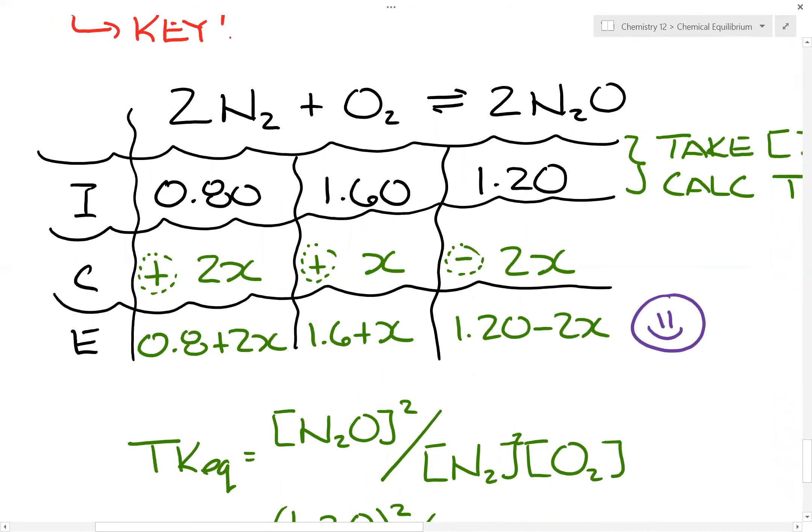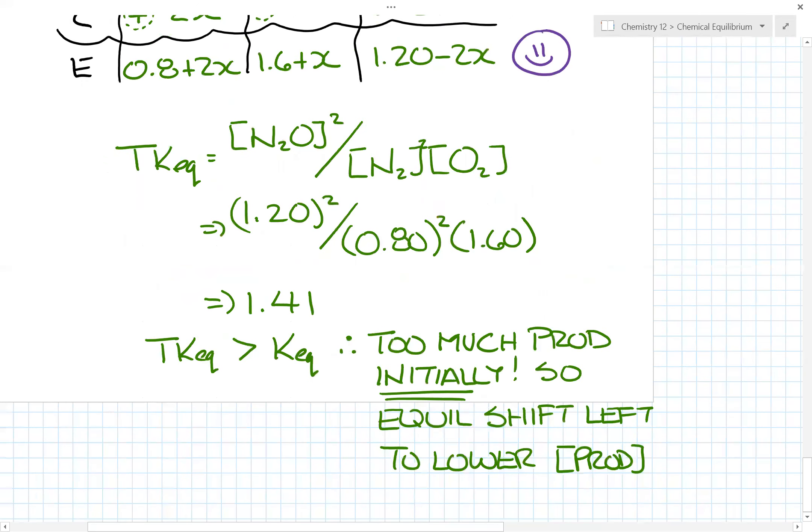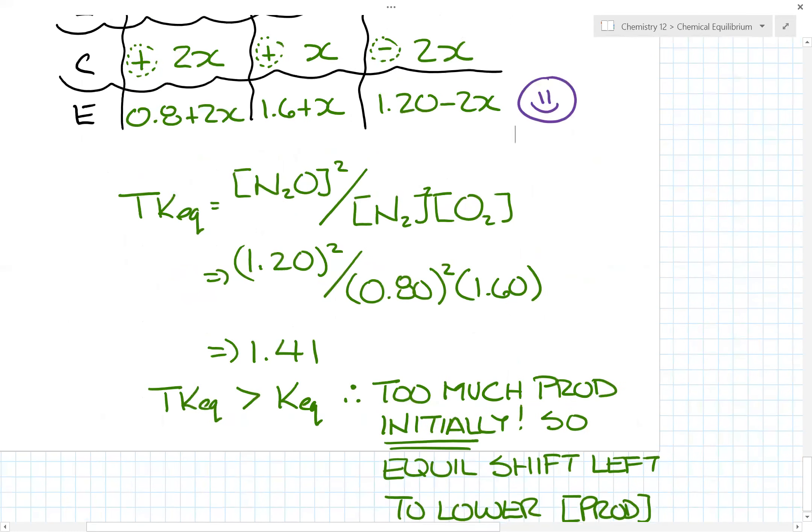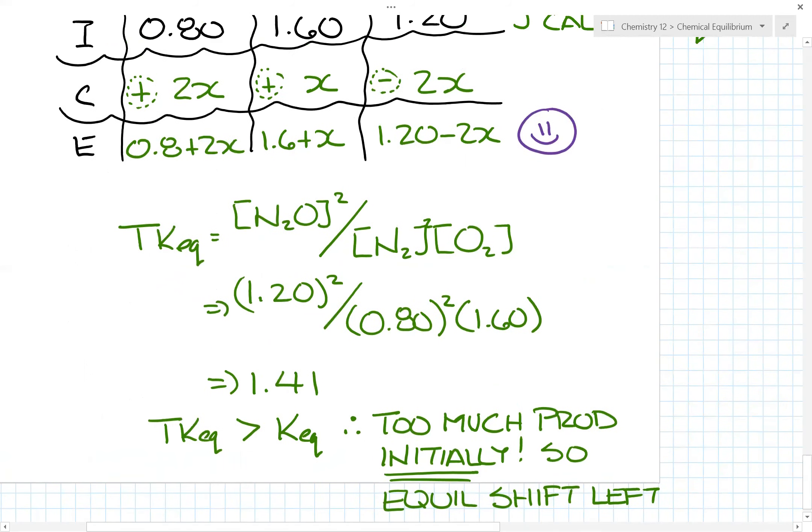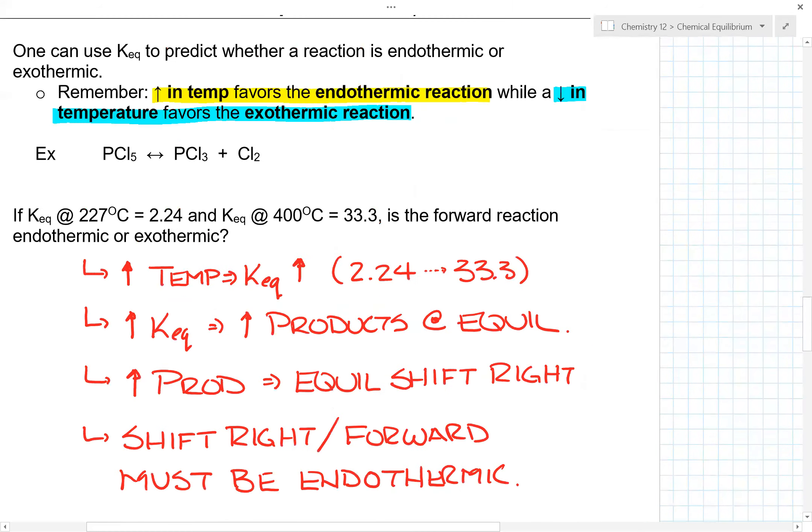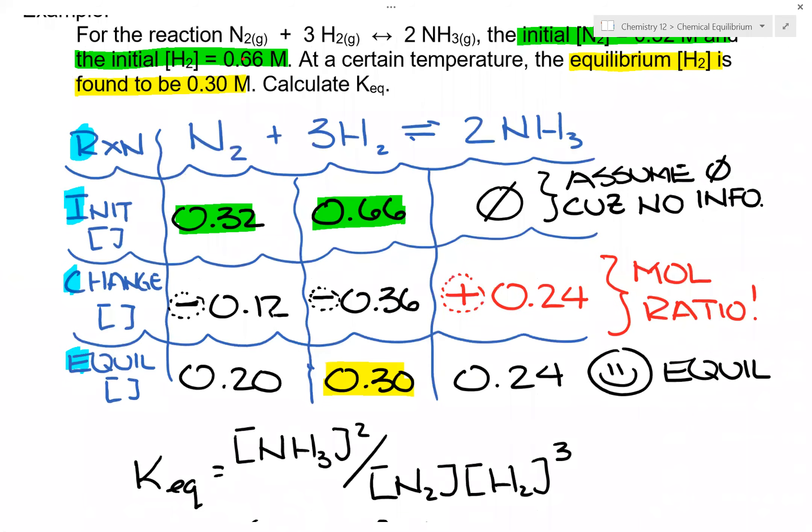Now, so what is the whole idea of this trial Keq is what you want to do is figure out which side would go up, which side would go down. Again, in our previous example, we didn't have to do it because there was a zero.